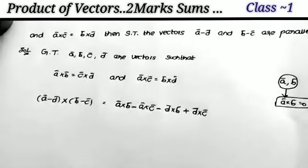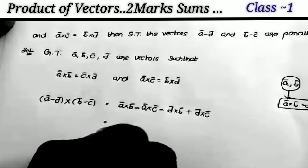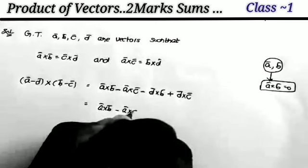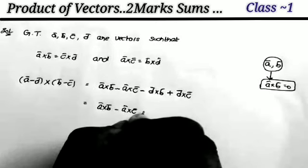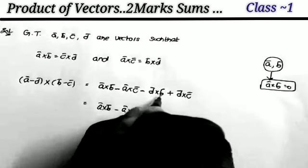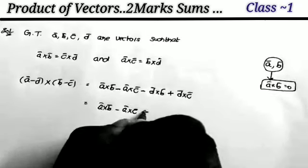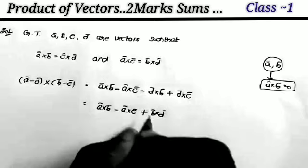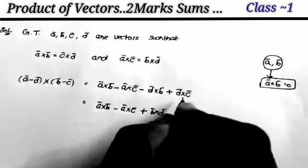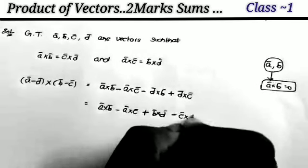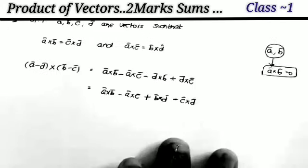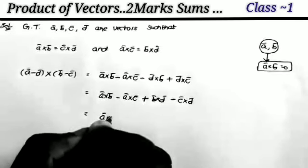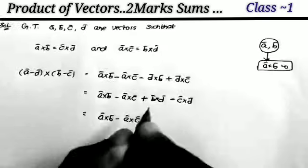So we have: a cross b, minus a cross c. Now, interchanging d cross b gives plus b cross d. And interchanging the last term, d cross c, gives minus c cross d. So the expansion becomes: a cross b, minus a cross c, plus b cross d, minus c cross d.